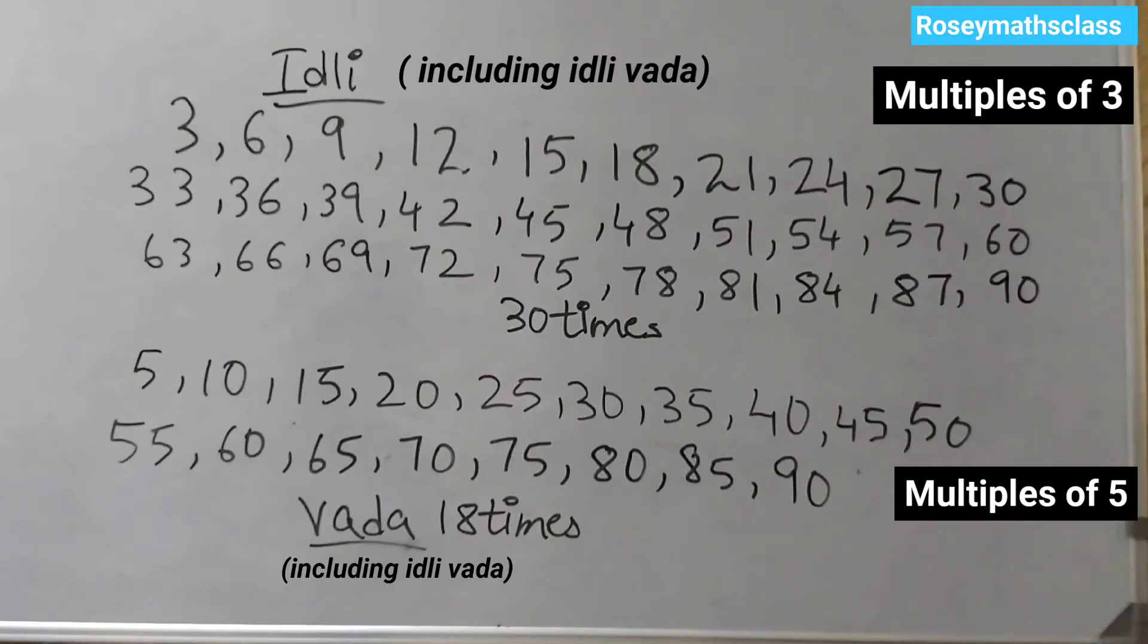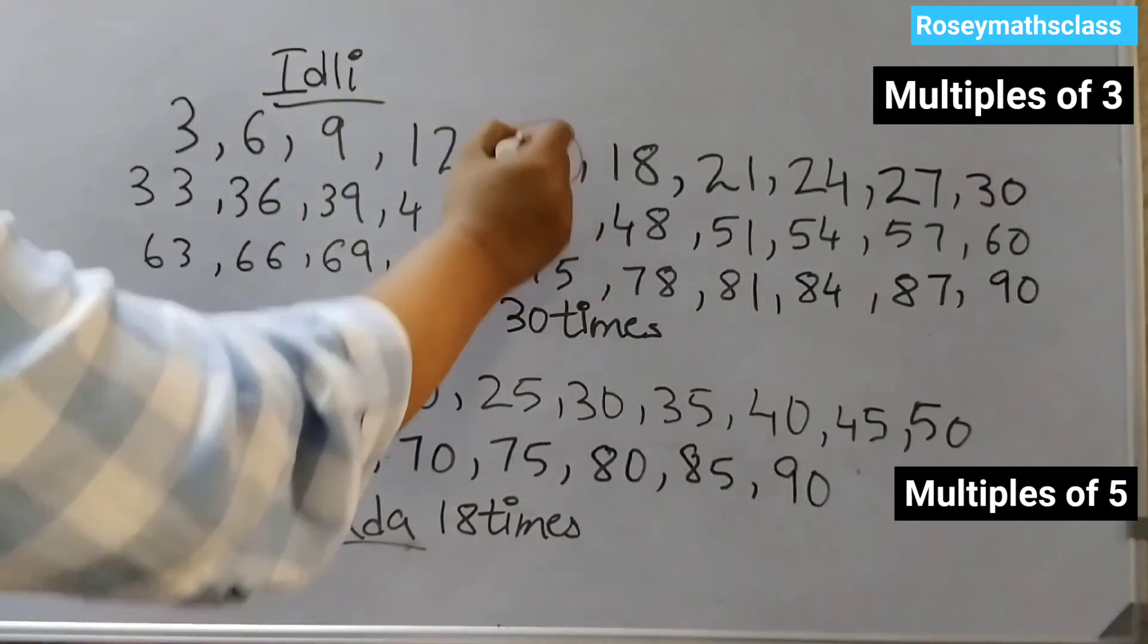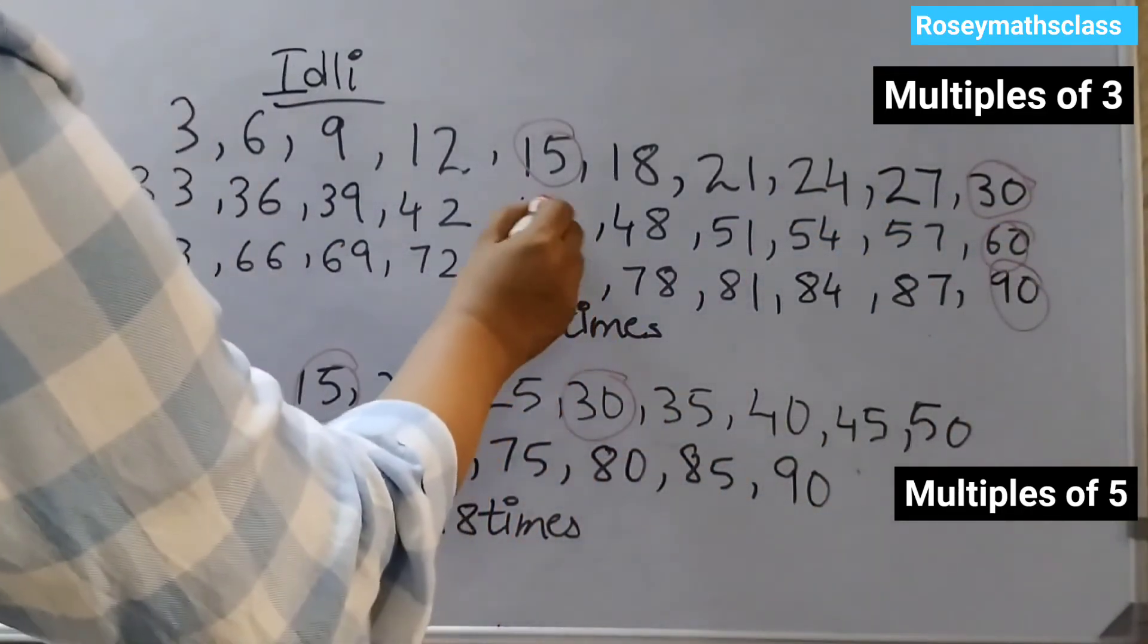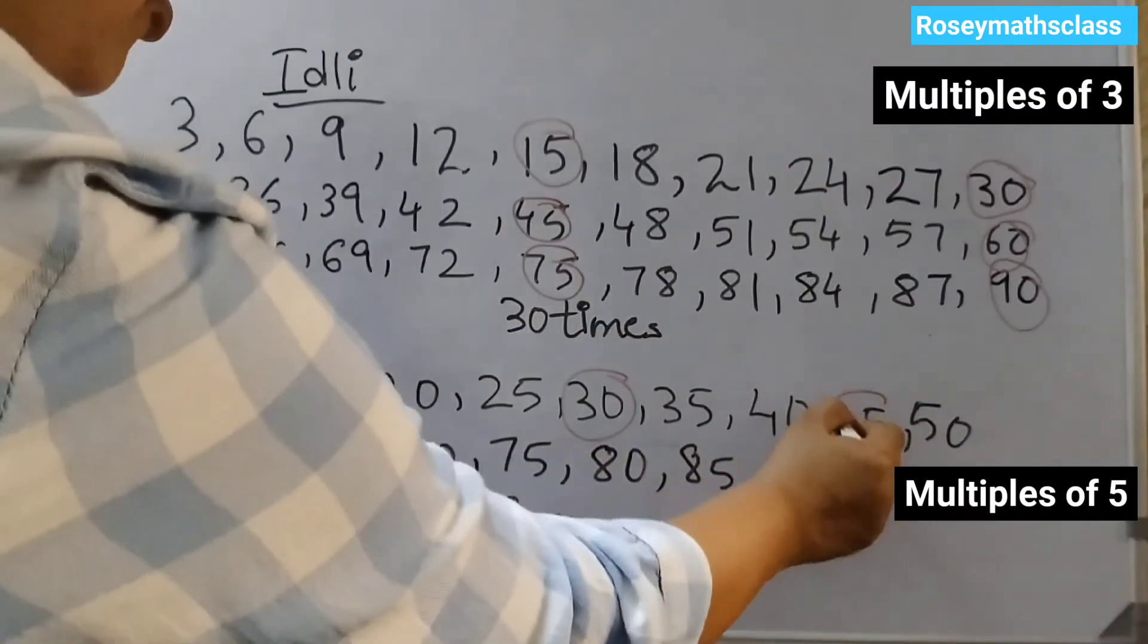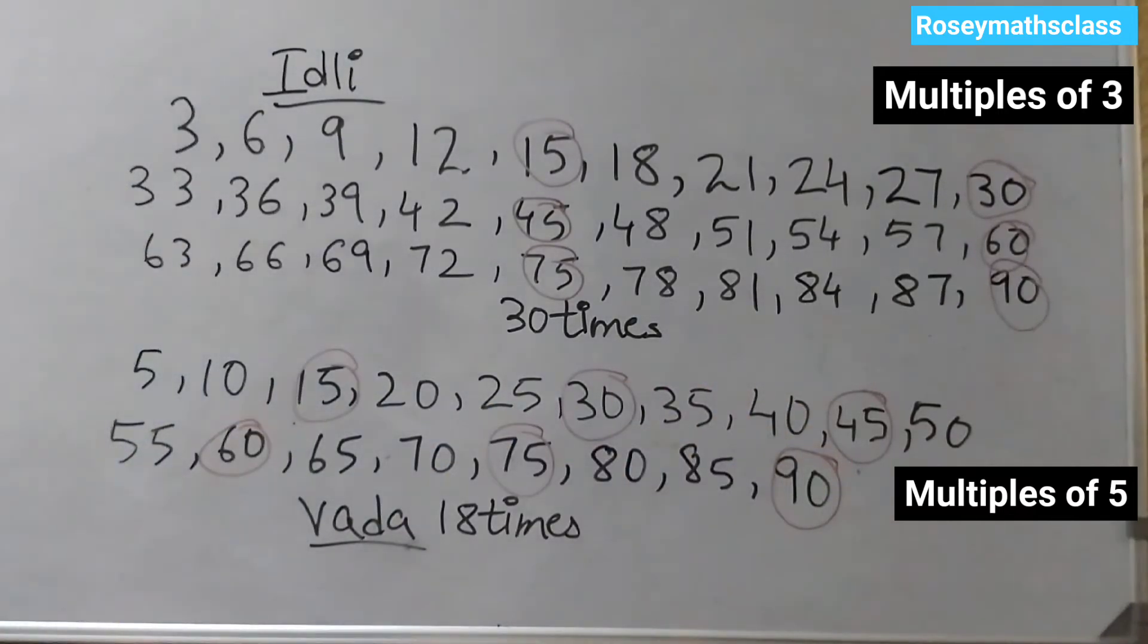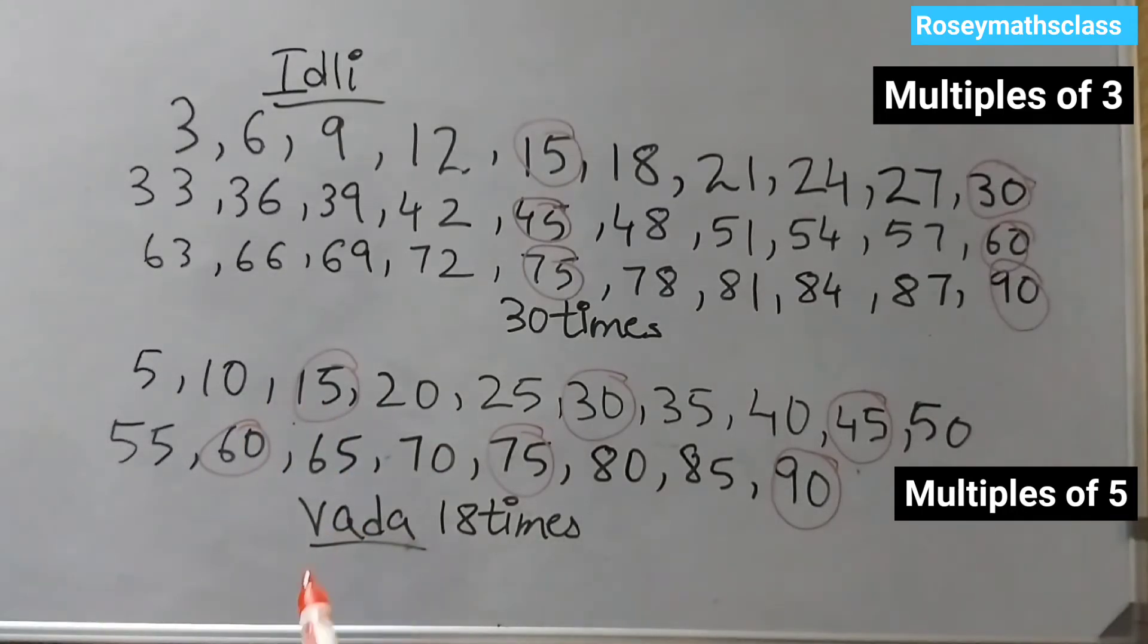The third part of the question is how many times would the children say Idli Vada? To say Idli Vada, it must be a common multiple of 3 and 5. So the common multiples are 15, 30, 45, 60, 75, 90. These numbers are present in the table of 3 also and in the table of 5 also. So whenever these numbers would come, the children would say Idli Vada. And we can count how many times: 1, 2, 3, 4, 5, 6. So they would say 6 times Idli Vada.